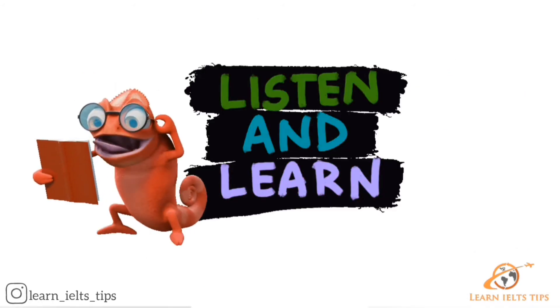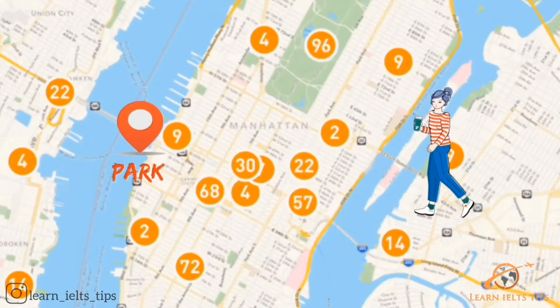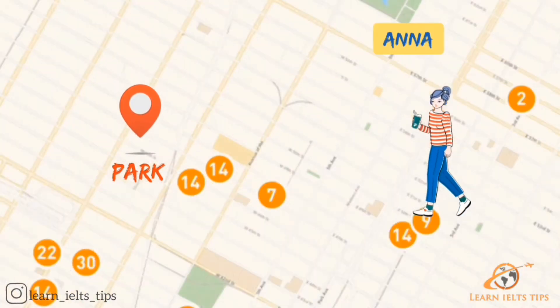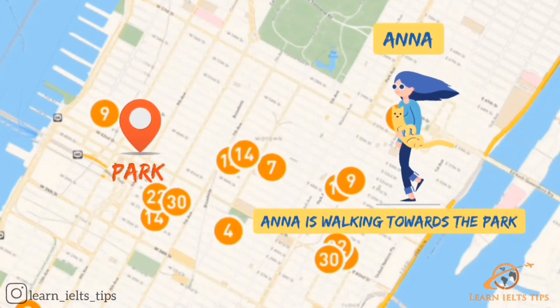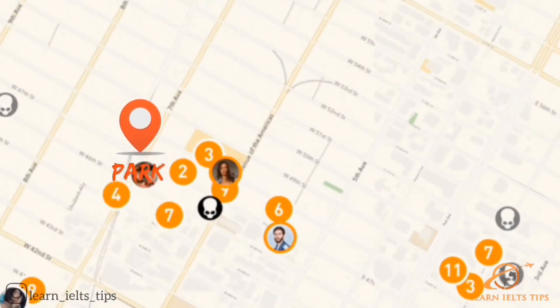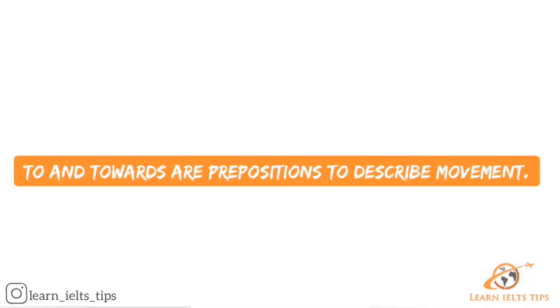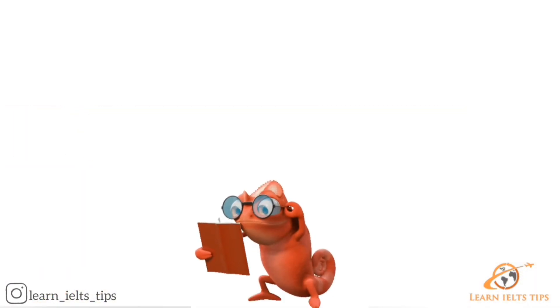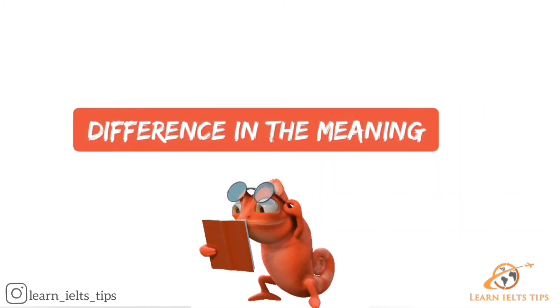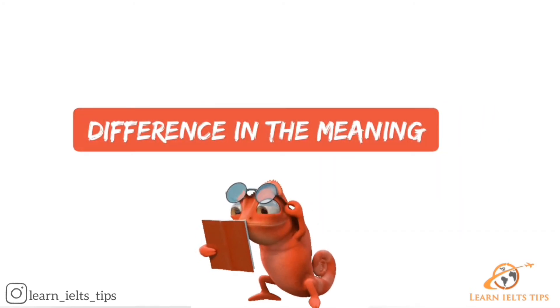Look at these two sentences. Ami is walking to the park. Ana is walking towards the park. To and towards are prepositions to describe movement. Both of these sentences are grammatically correct, but there is a slight difference in the meaning.